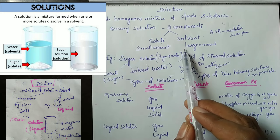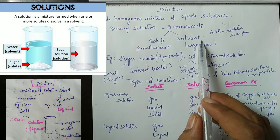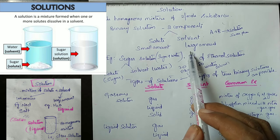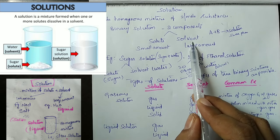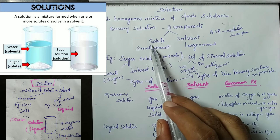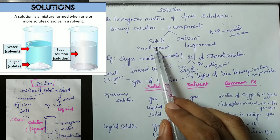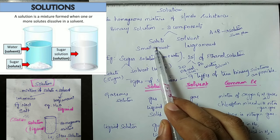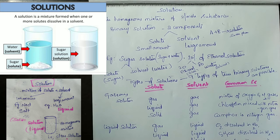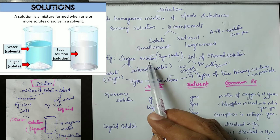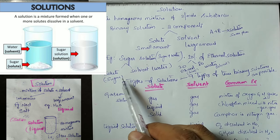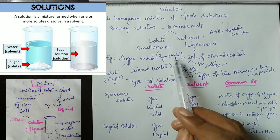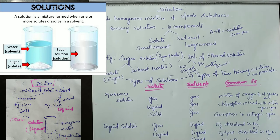In a binary solution, the larger amount of substance is called the solvent and the smaller amount is called the solute. For example, in sugar solution, solute is sugar and solvent is water.